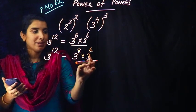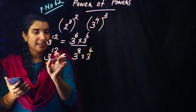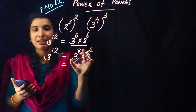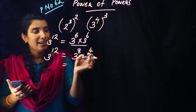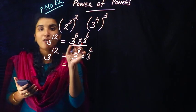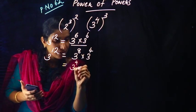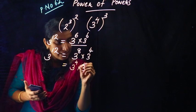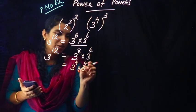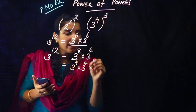Now we have 3 raised to 12. We can write it as 3 raised to 8, and then 3 raised to 8 is 4 plus 4, so we have 3 raised to 4 into 3 raised to 4 into 3 raised to 4.